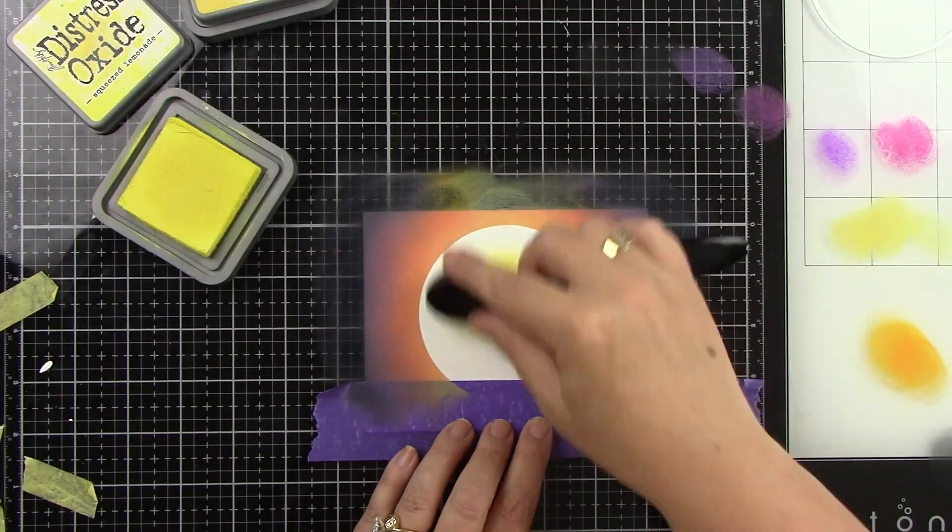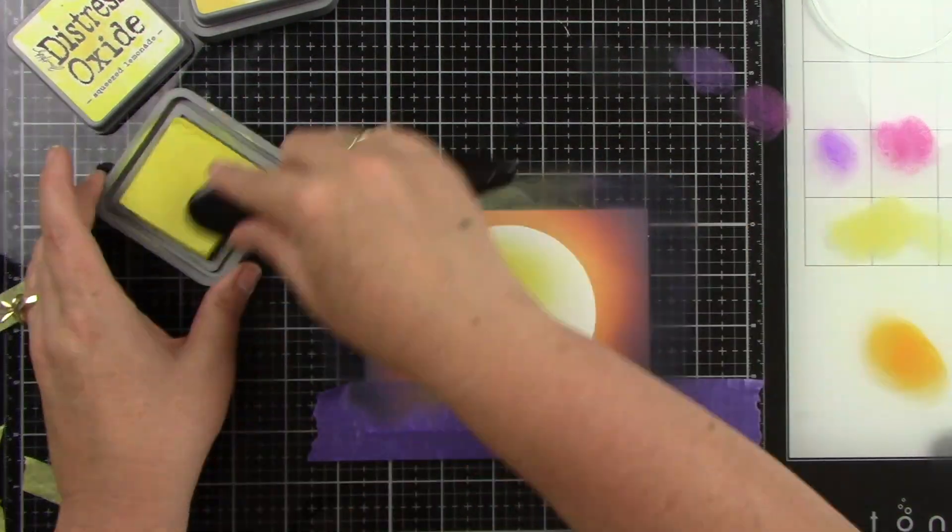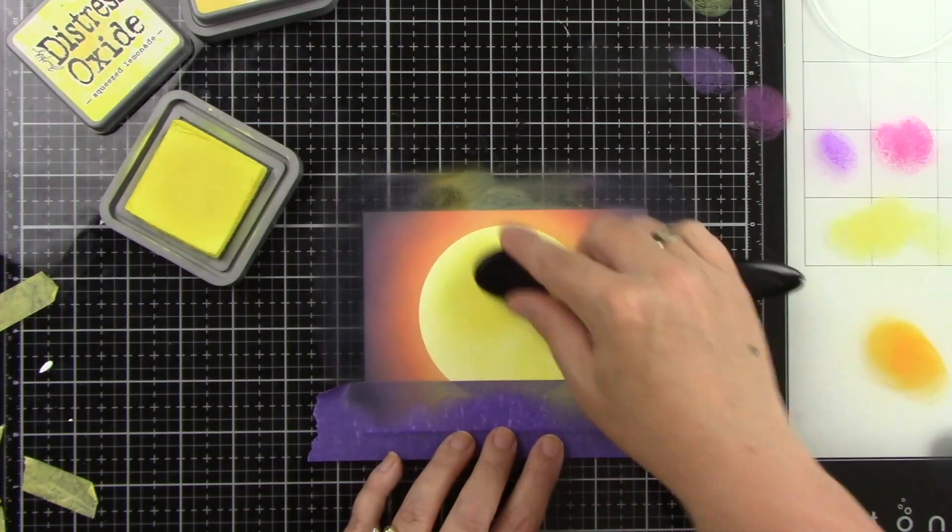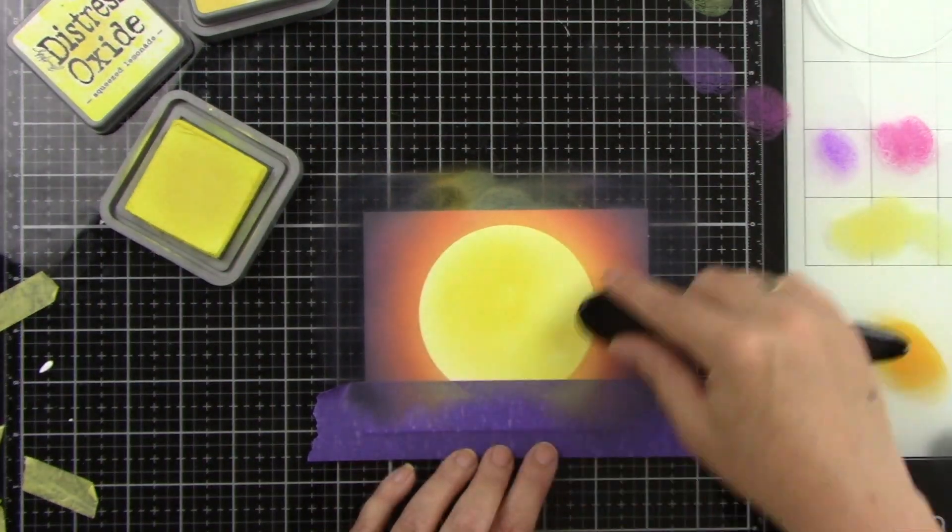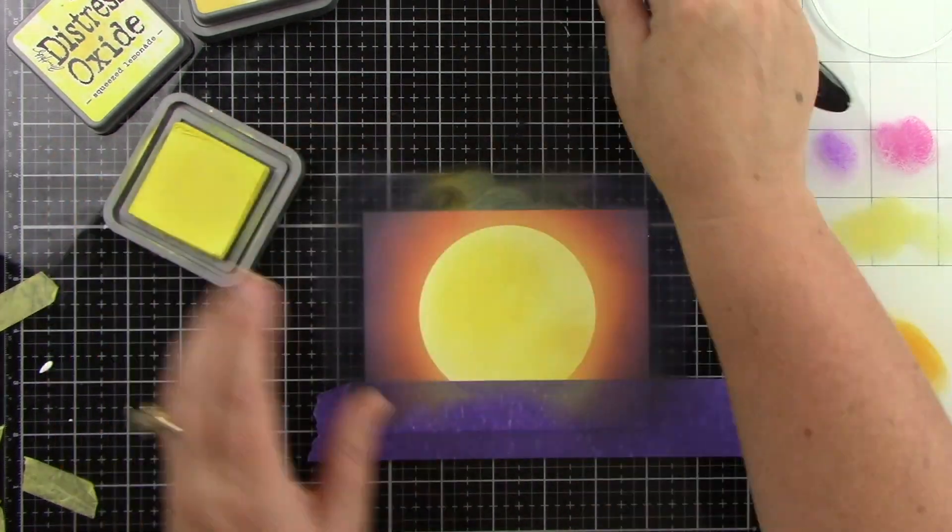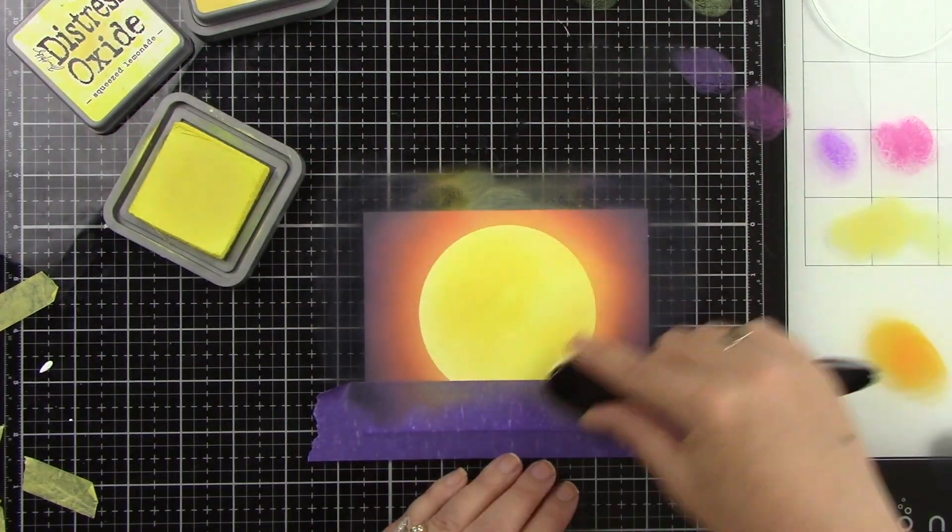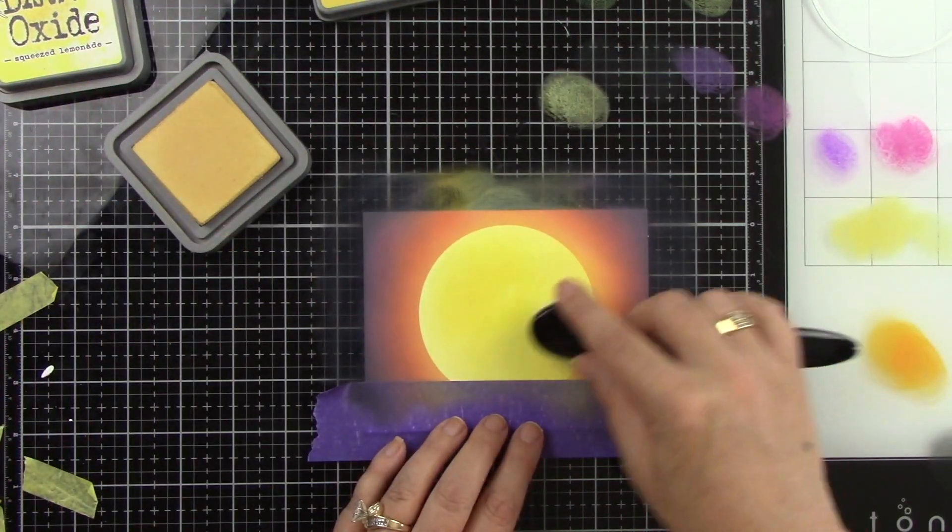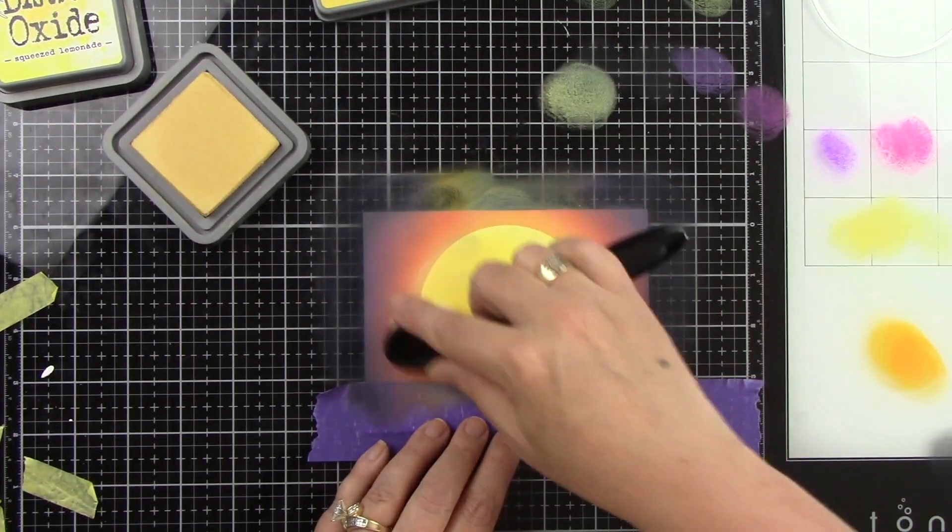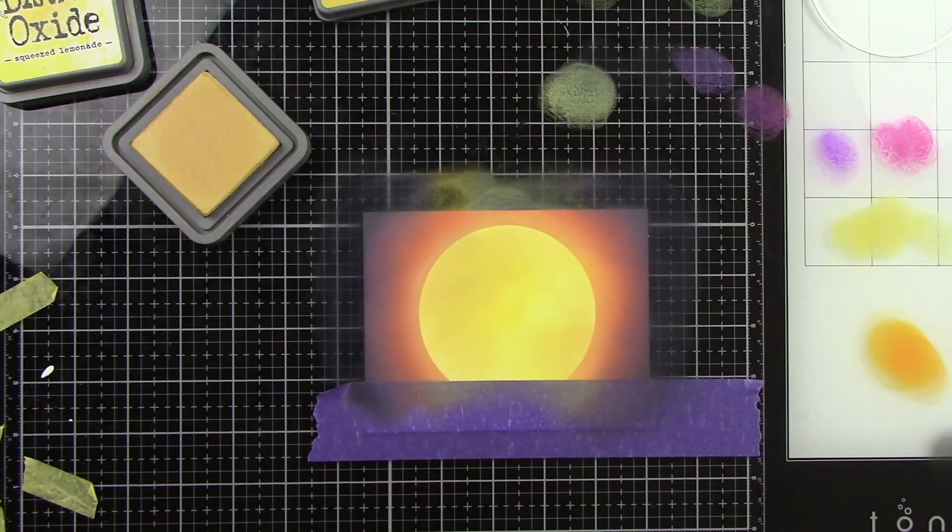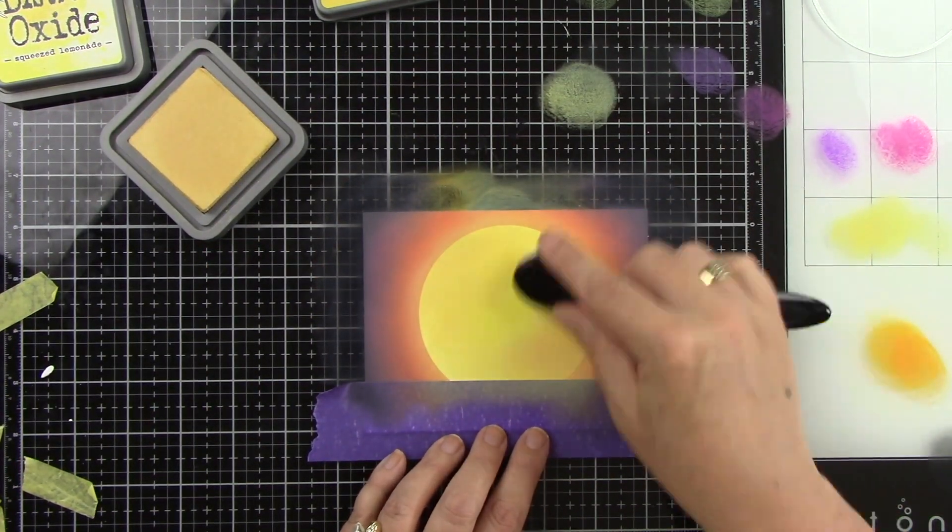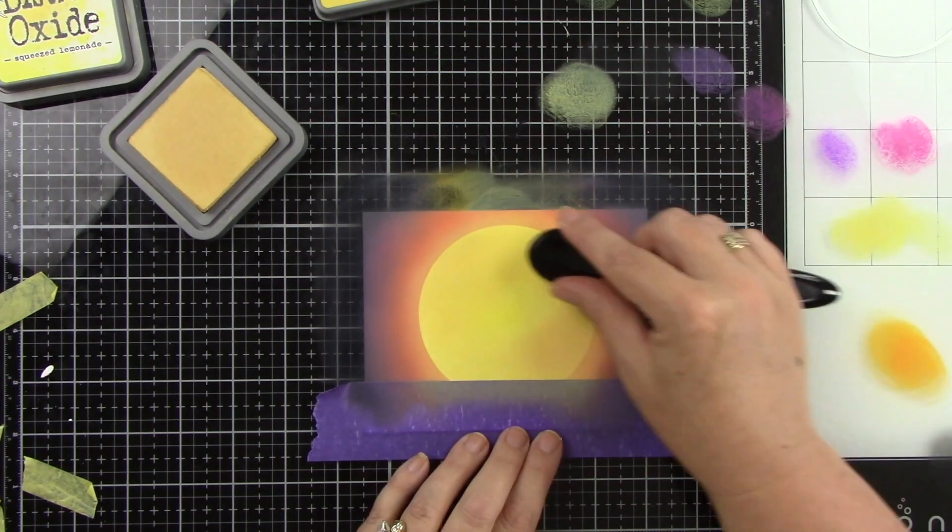I am going to come in with squeezed lemonade on this and I am not trying to ink this perfectly. I do not want a really perfect blend. I'm just laying down the color and you can really see it's kind of splotchy, but that's what I'm going for. Then I'm going to come back in with the scattered straw and only add that in certain areas, leaving that kind of blotchy so it looks like there is some character to the moon even with just the ink blending.